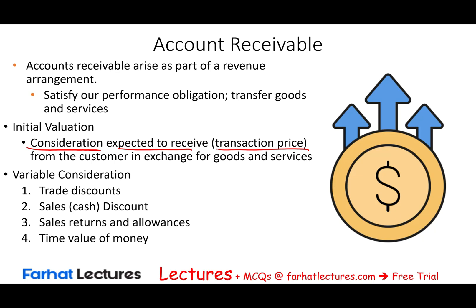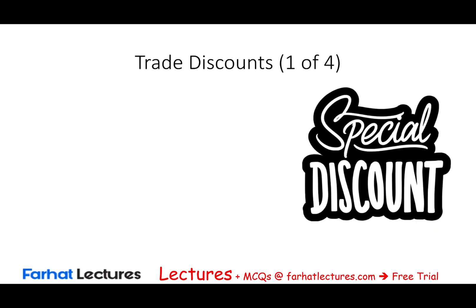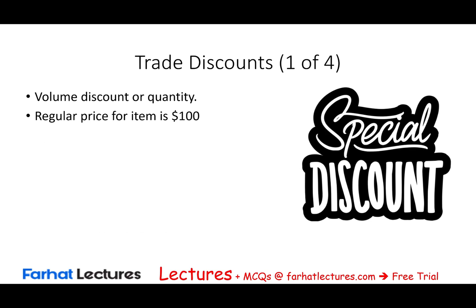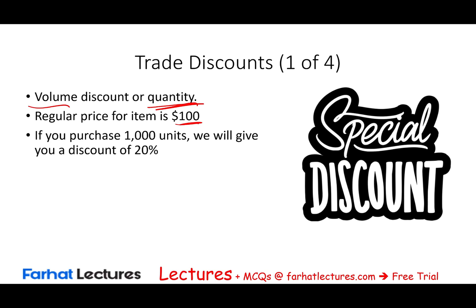In the real world, when you buy goods and services, you might buy in volume. Companies like Walmart or Costco buy in large quantities. There might be a catalog price of $100, and the company doesn't want to change that catalog price. But they'll give you a discount based on quantity or volume — for example, if you purchase 1,000 units, they give you 20% off; 10,000 units might get you 30% off.